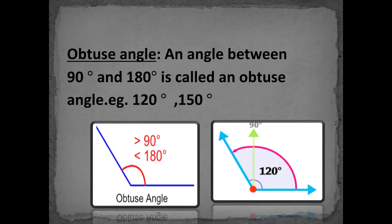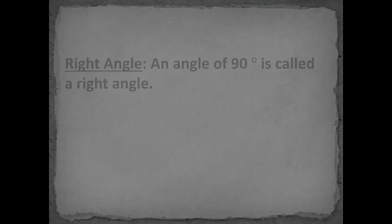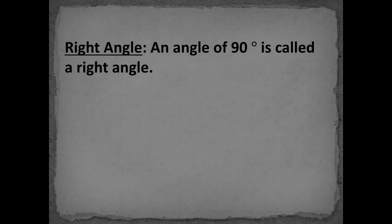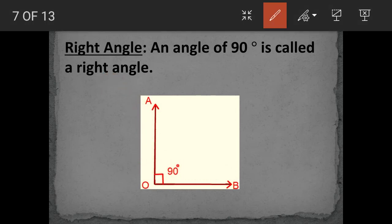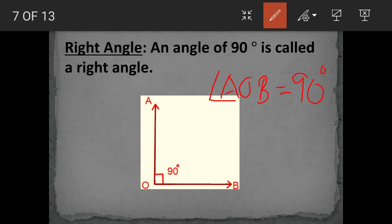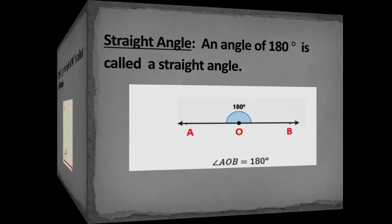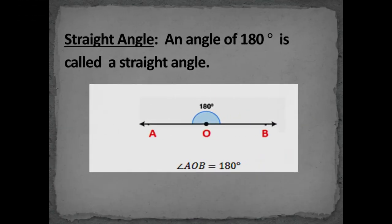Next we have the right angle. An angle whose measure is exactly 90 degrees is called a right angle. Here we have right angle AOB. To represent it, we use a small square symbol at the vertex. Angle AOB measures 90 degrees.